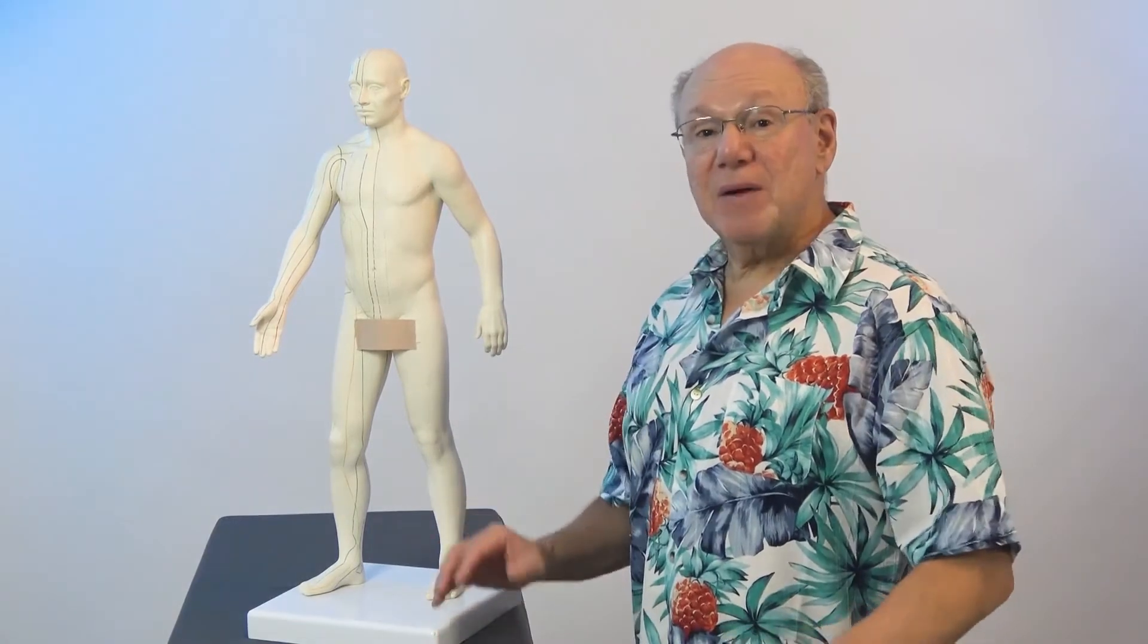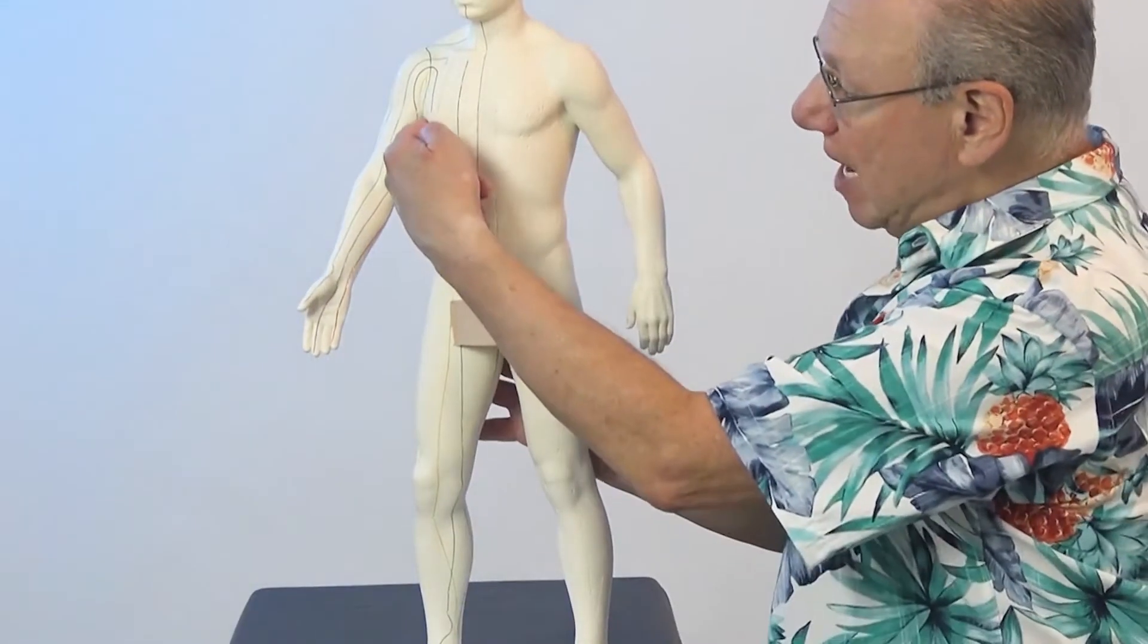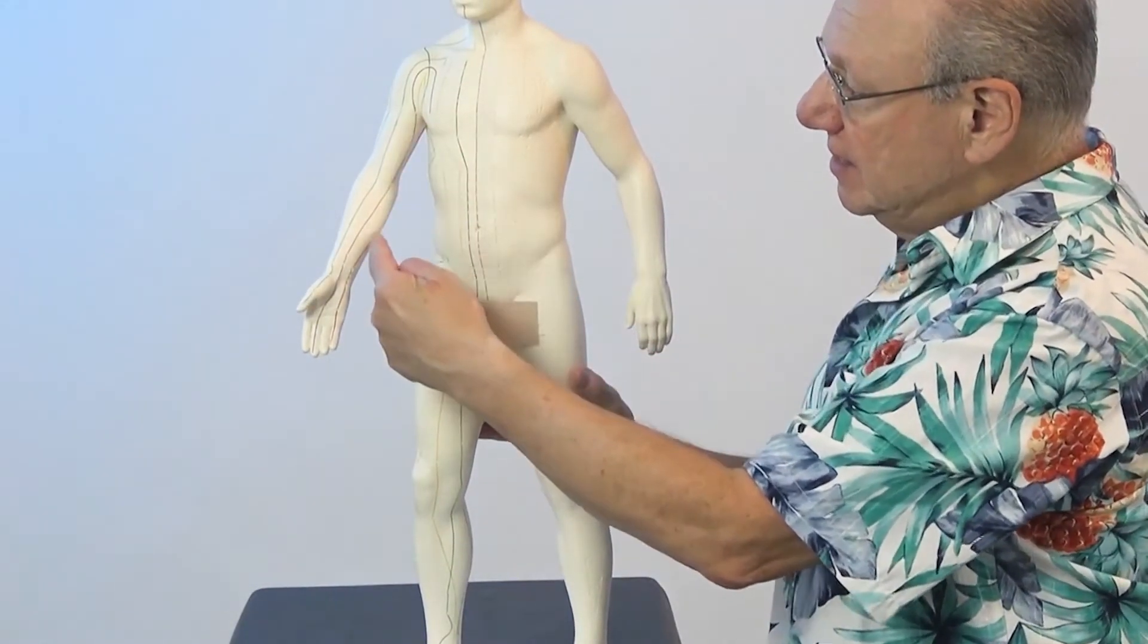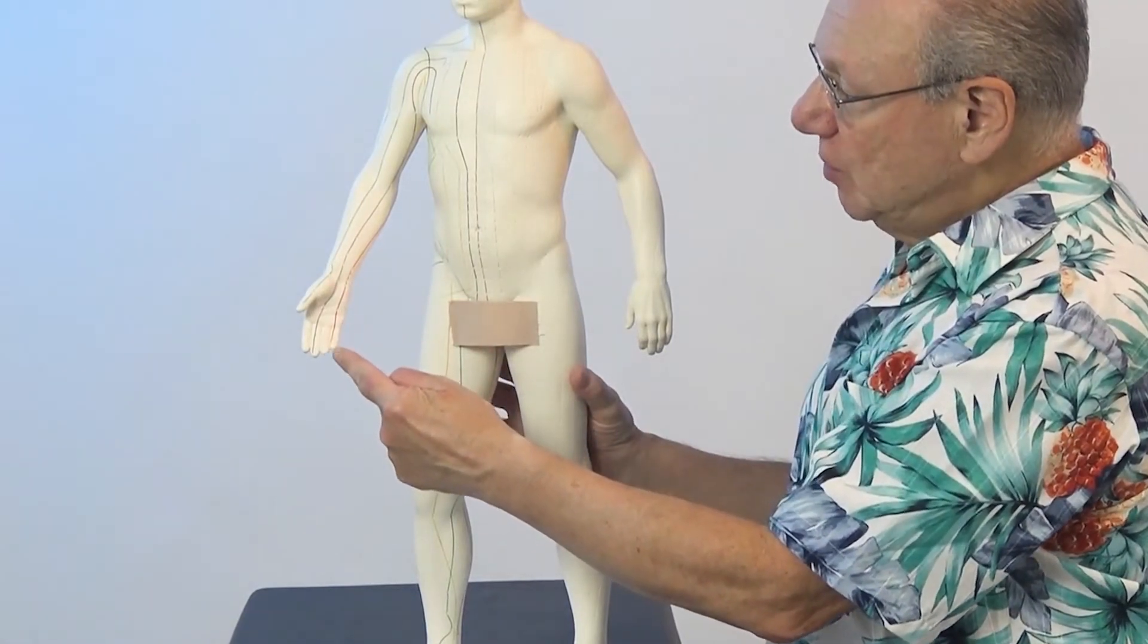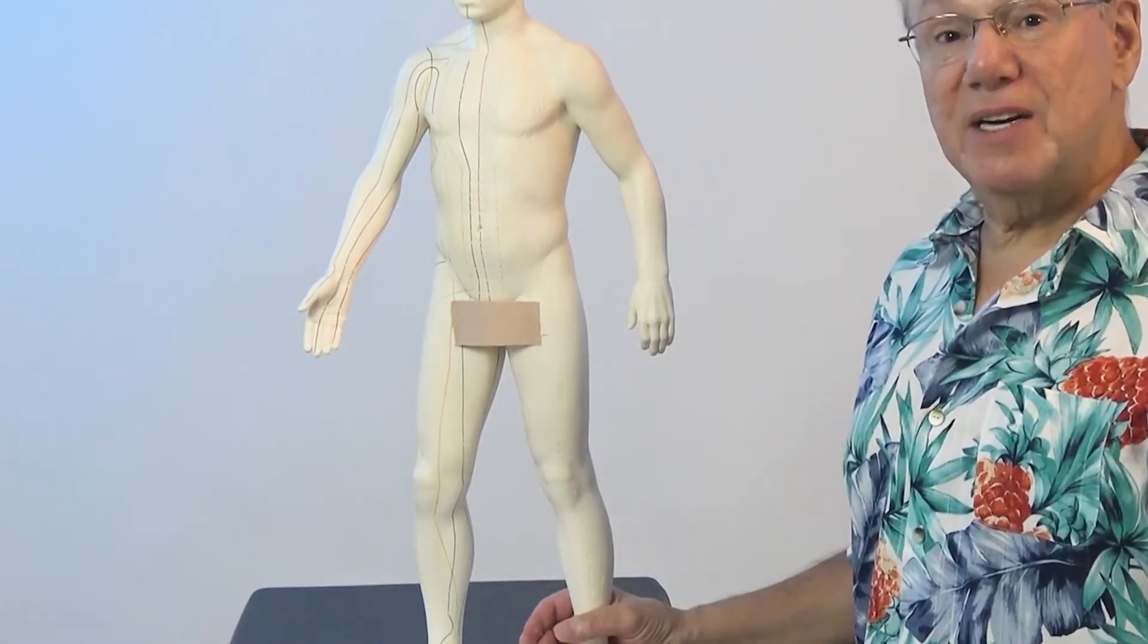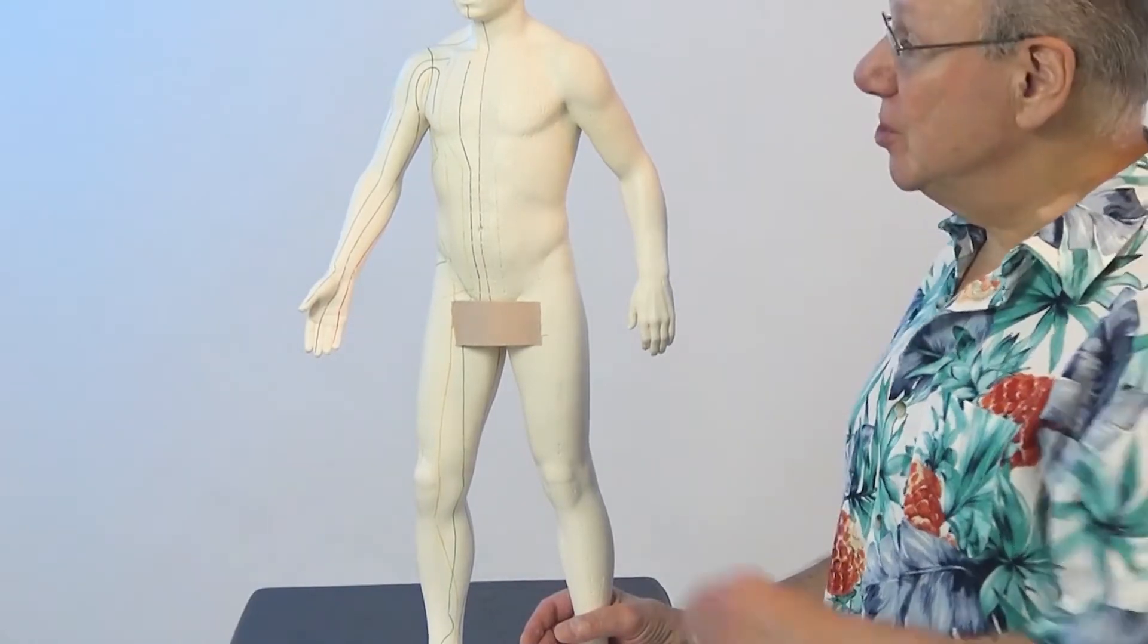Heart 7 is located on the Heart Meridian. The Heart Meridian starts in the dome of your armpit, runs down the inside of your arm, until it reaches the tip of your little finger. And, of course, has internal connections with your heart.